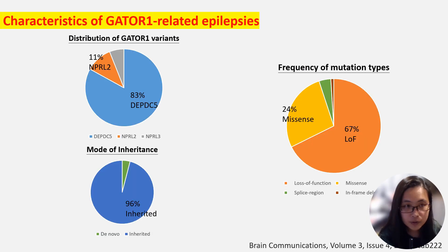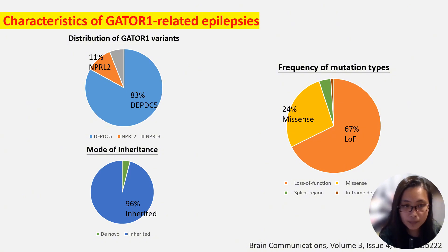The majority of GATOR-1-related epilepsy is caused by mutations in the DEPDC5 gene, followed by NPRL-2 and NPRL-3 genes. Most of the mutations are inherited, with loss-of-function mutation being the major type, followed by missense mutation.